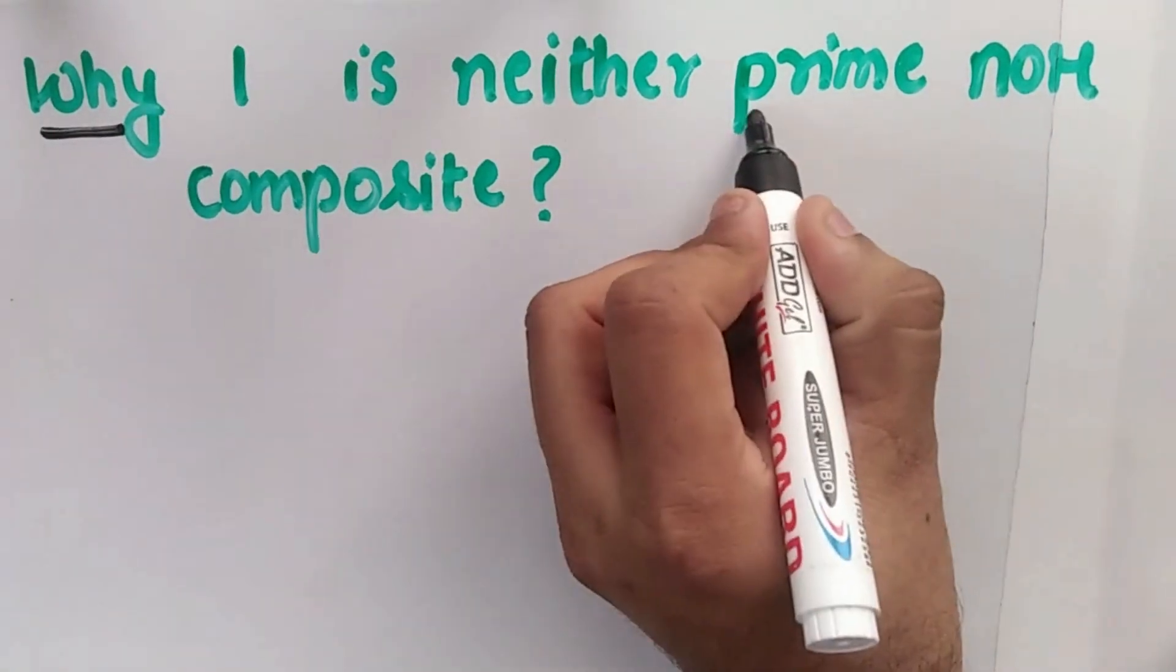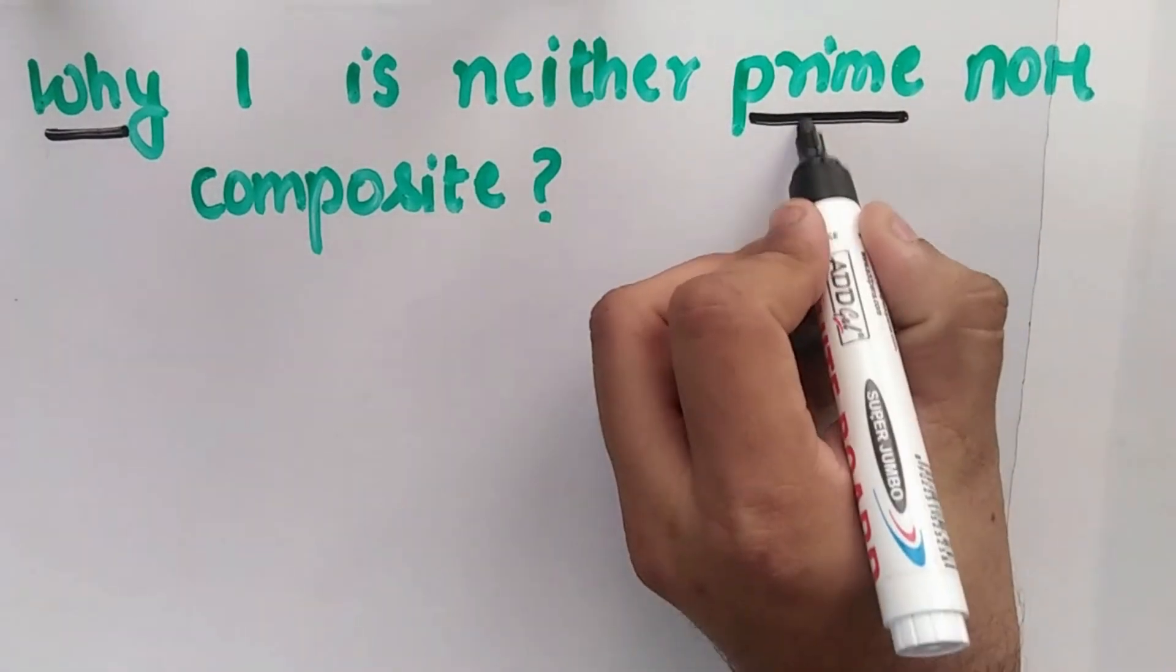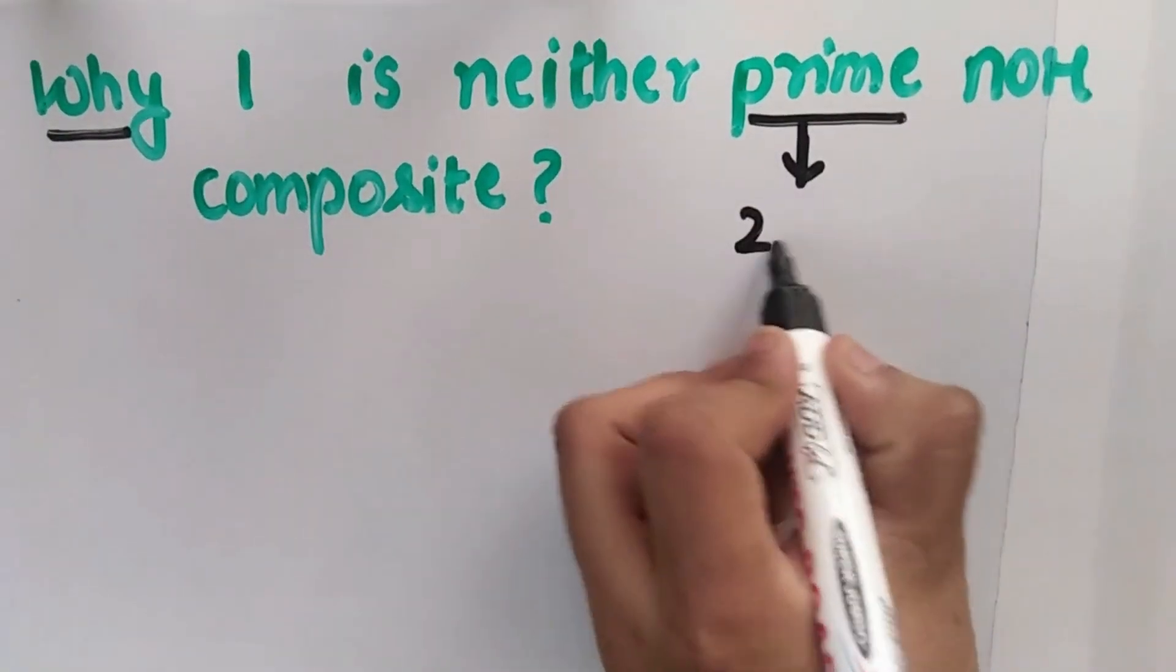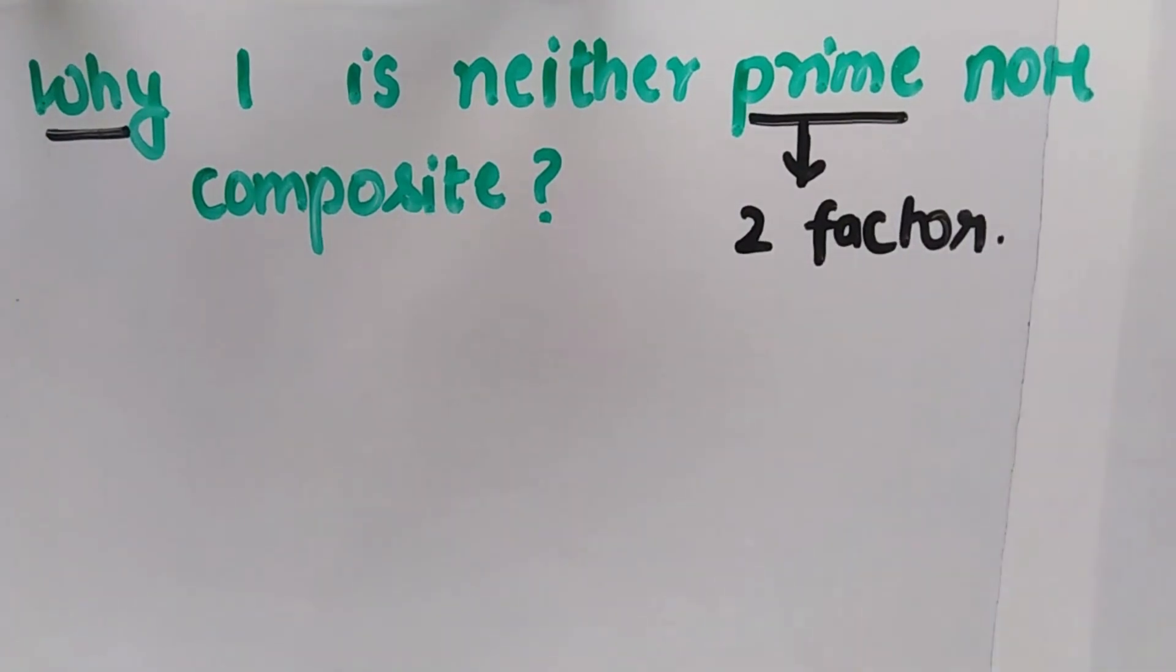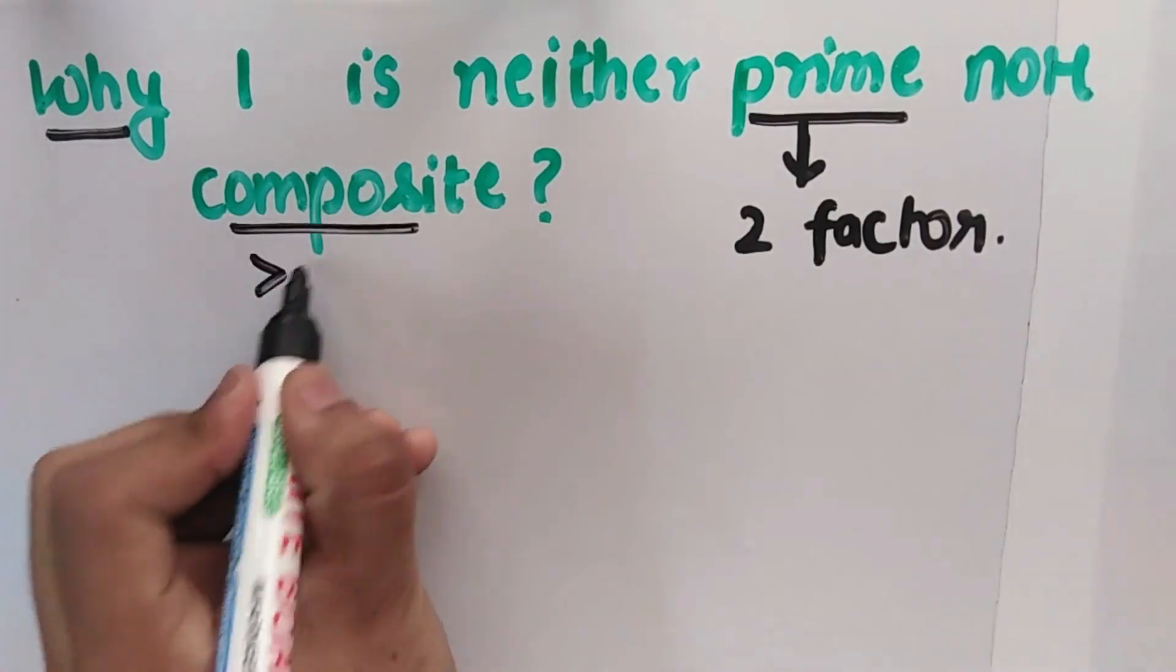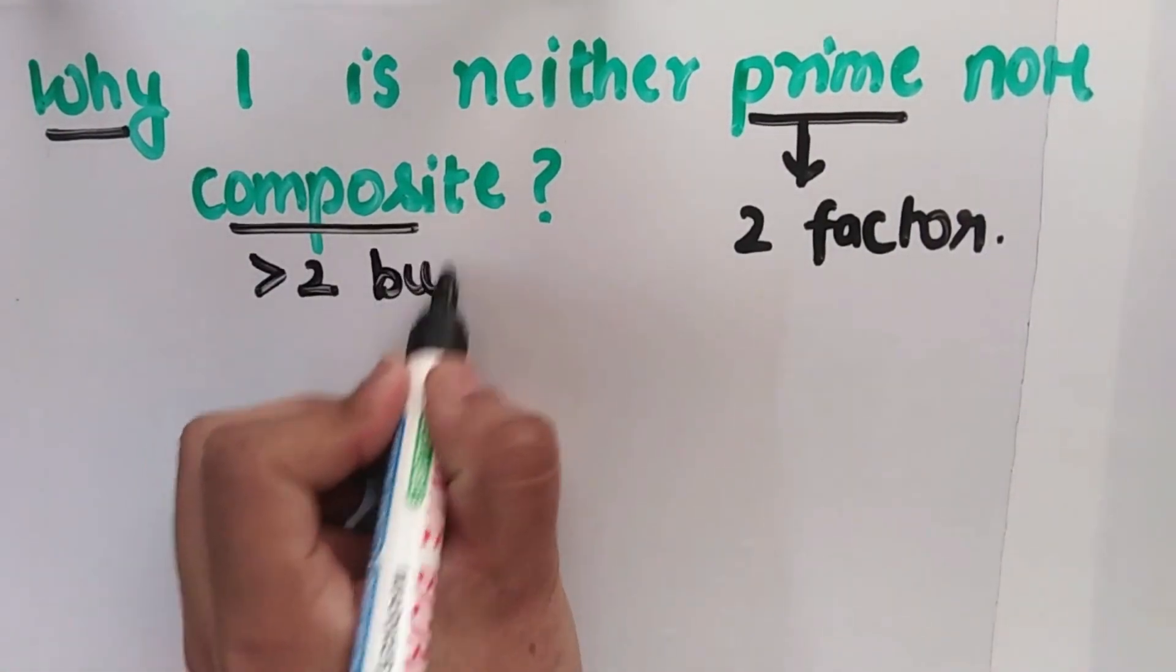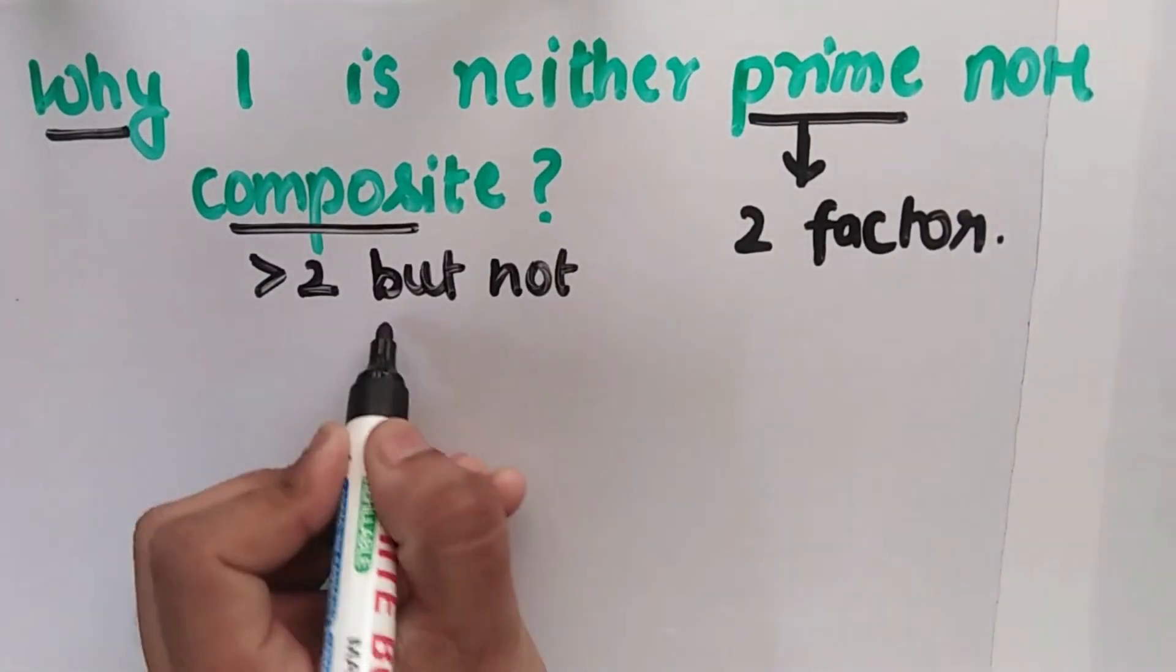The definition for prime numbers states that a prime number has only two factors: one and the number itself. And a composite number is any number which has more than two factors, but not infinite number of factors.